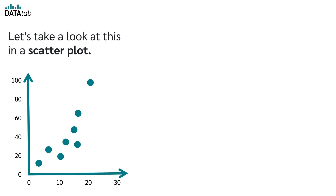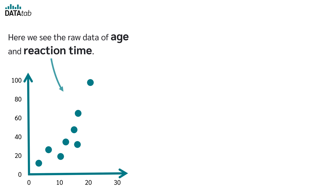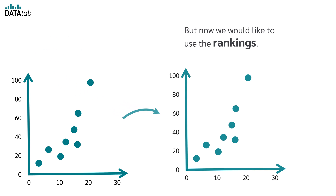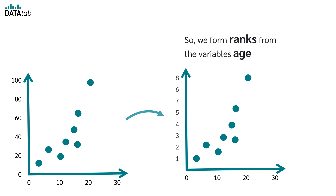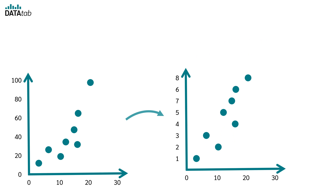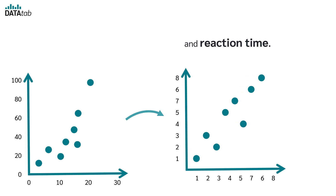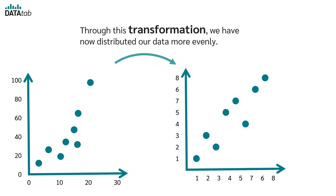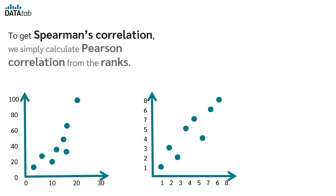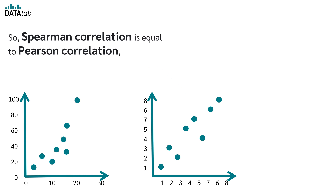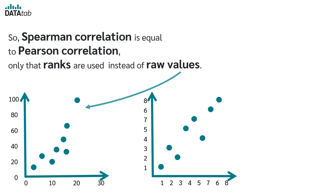Let's take a look at this in a scatter plot. Here we see the raw data of age and reaction time. We form ranks from the variables age and reaction time. Through this transformation, we have now distributed our data more evenly. To get Spearman's correlation, we simply calculate Pearson correlation from the ranks. So Spearman correlation is equal to Pearson correlation, only that the ranks are used instead of raw values.